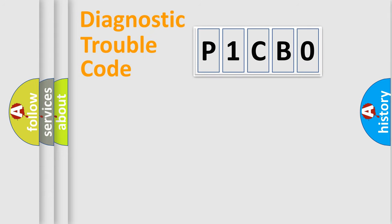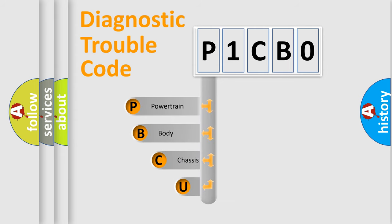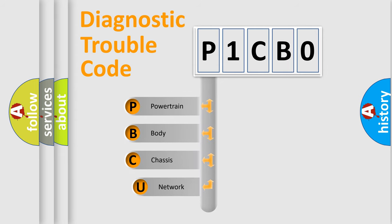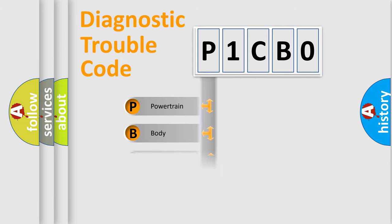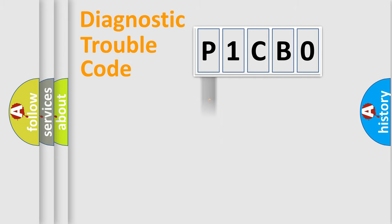Let's do this. First, let's look at the history of diagnostic fault code composition according to the OBD2 protocol, which is unified for all automakers since 2000. We divide the electric system of automobile into four basic units: Powertrain, Body, Chassis, and Network.